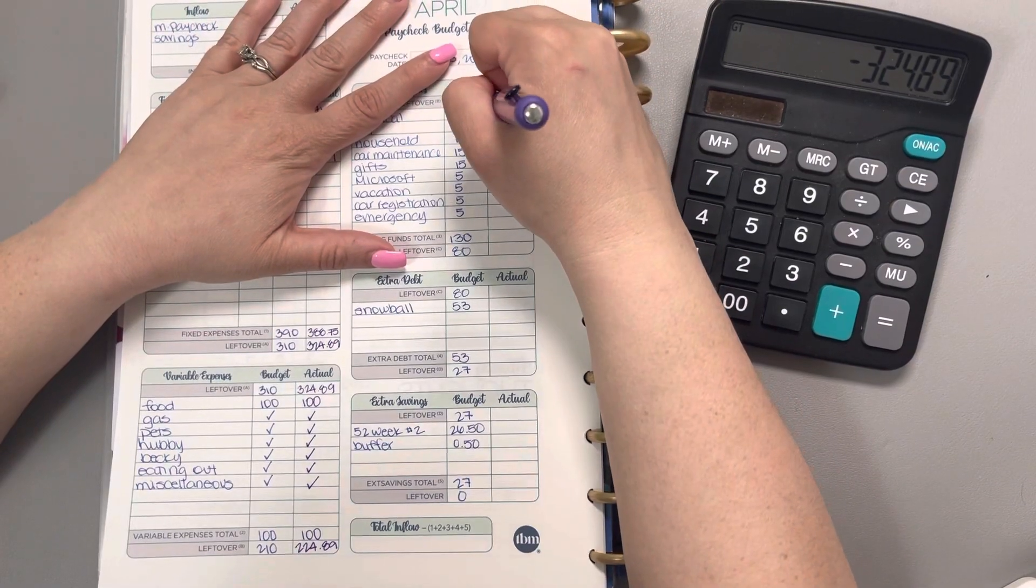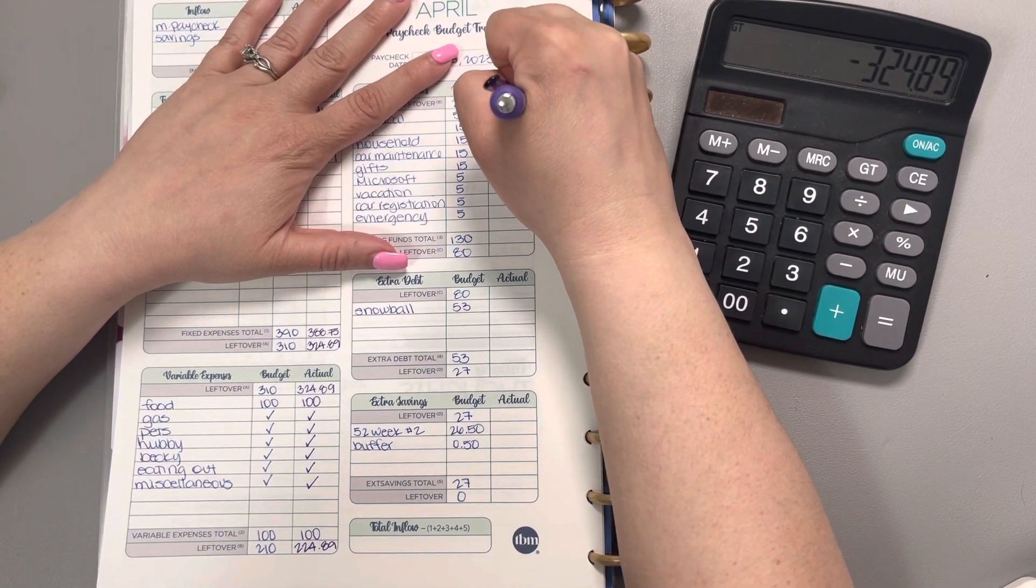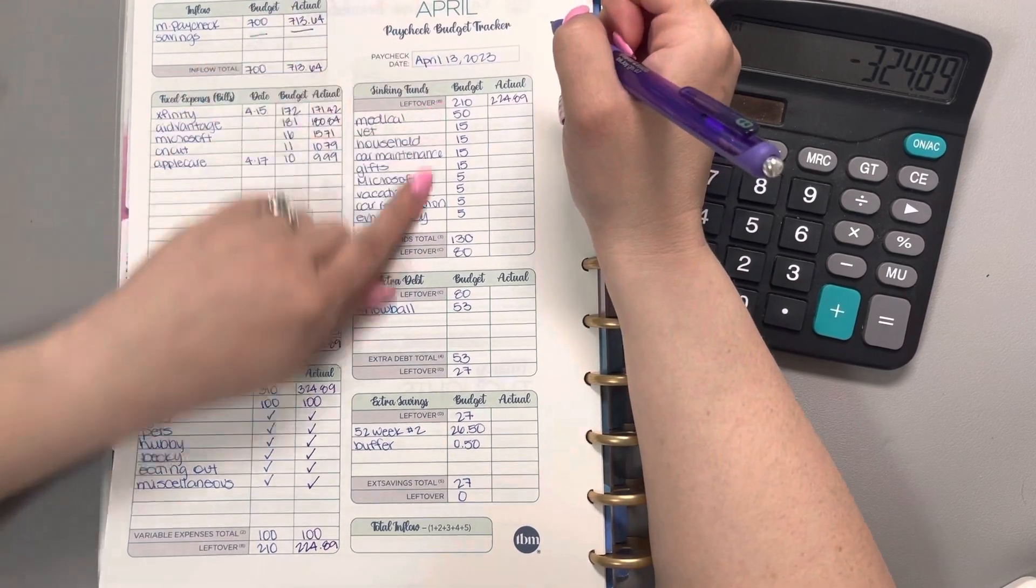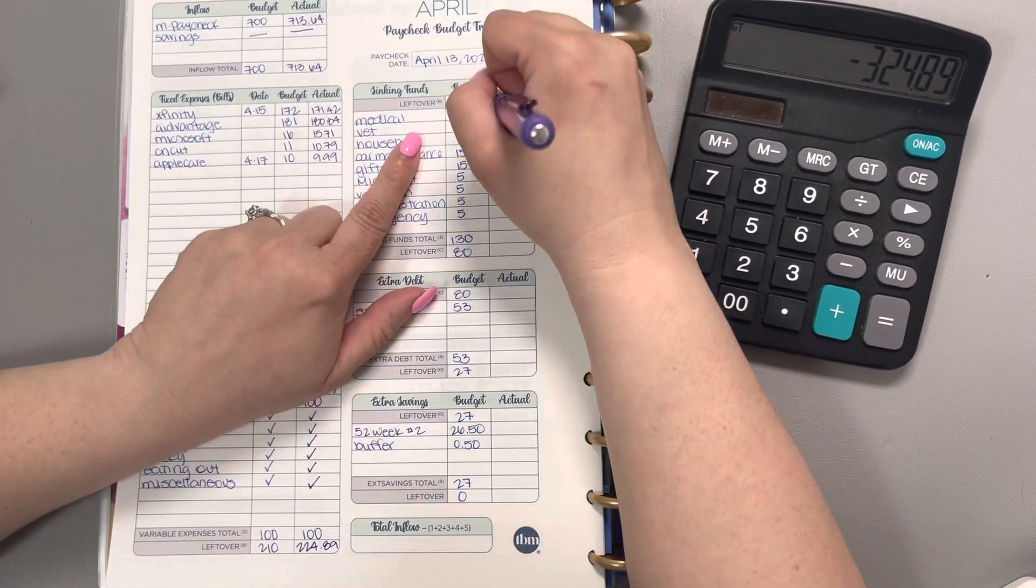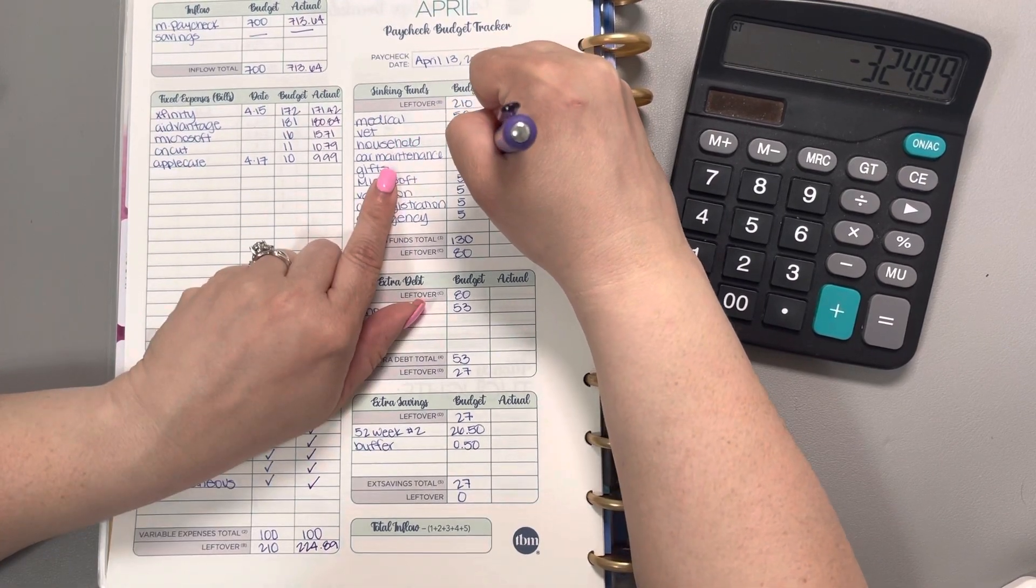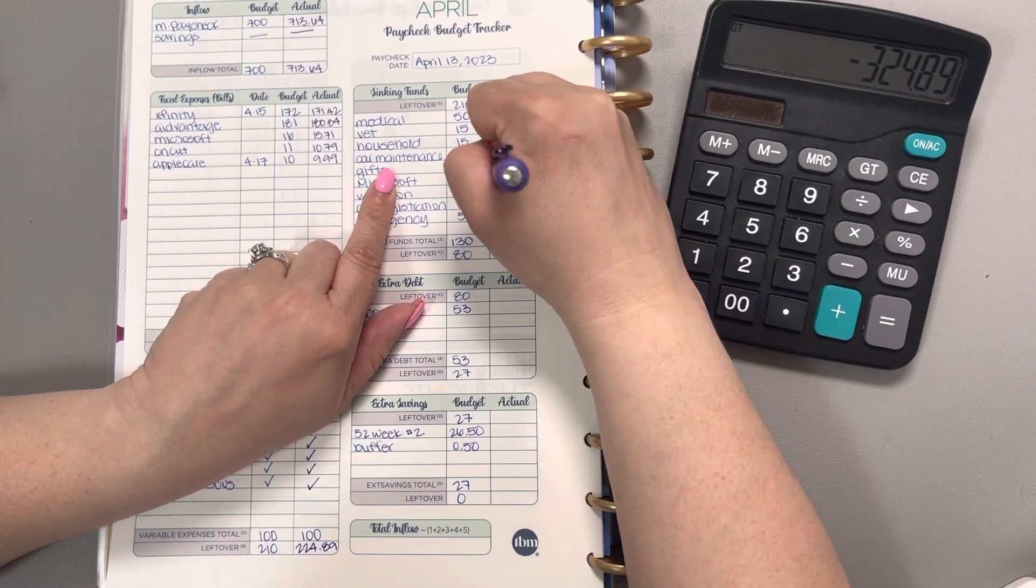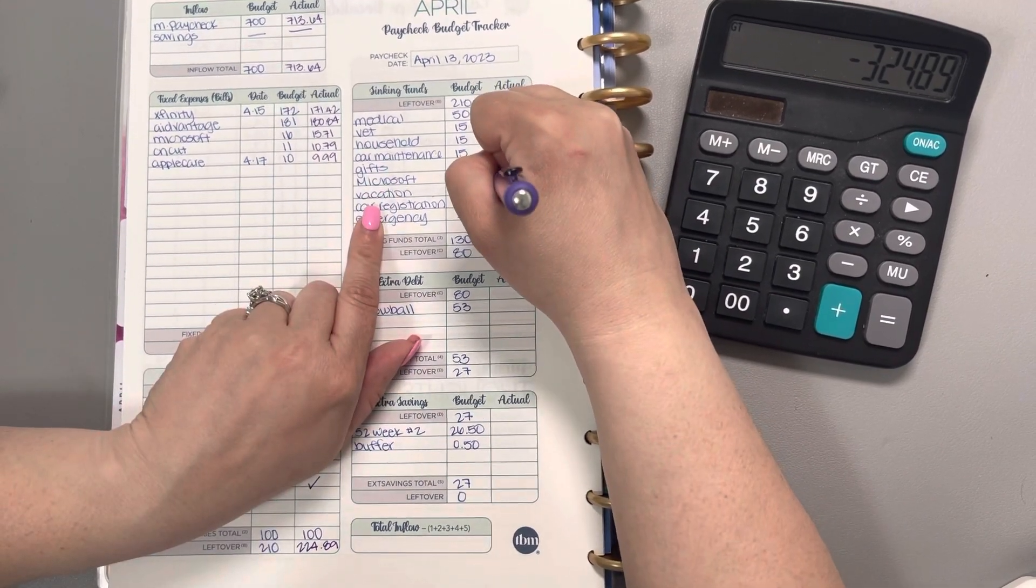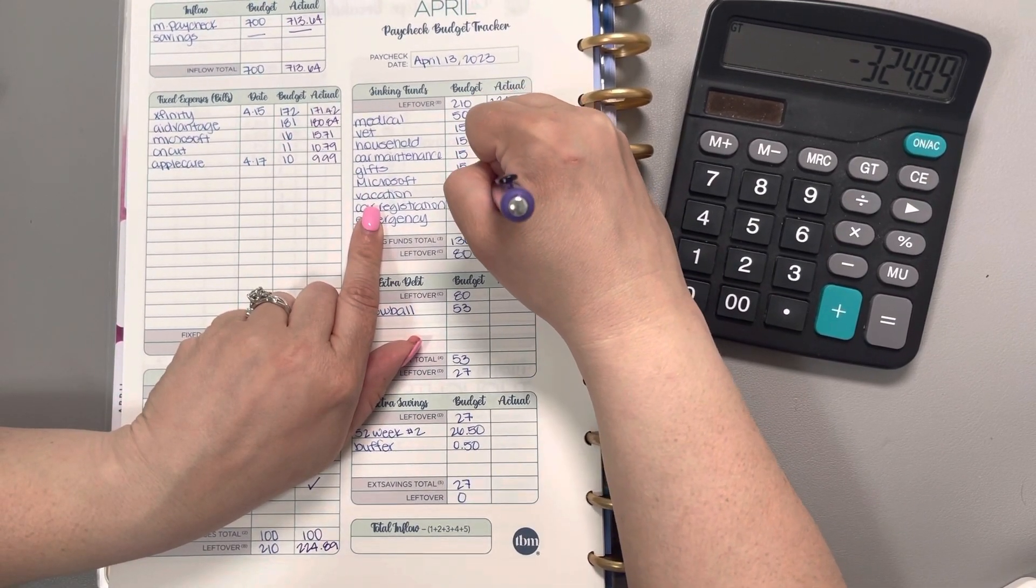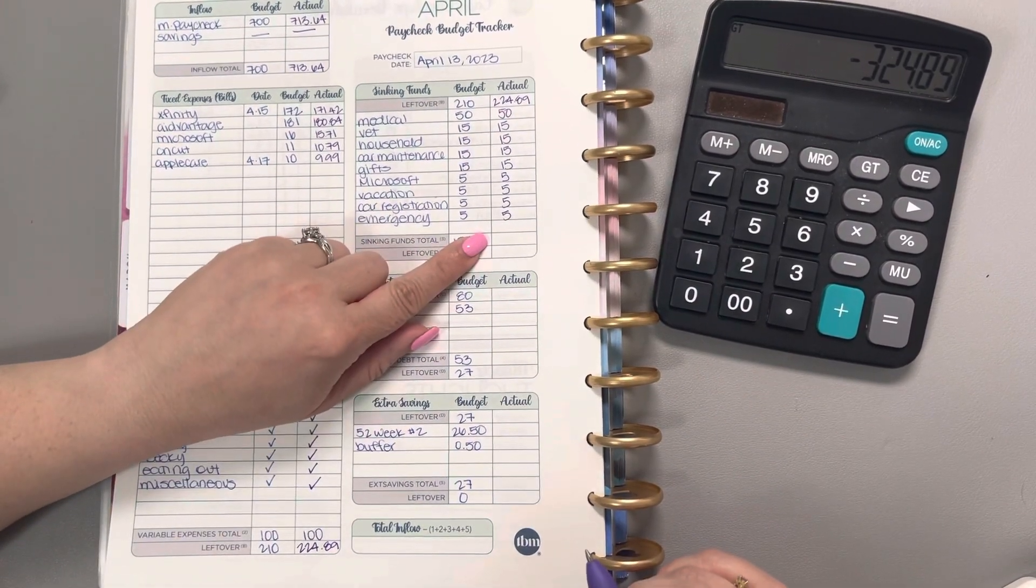Moving that value over, we're going to fill our sinking funds. Medical will get $50. Vet, household, car maintenance, and gifts will get $15 each. Microsoft renewal, vacation, car registration, and emergency will get $5 apiece.